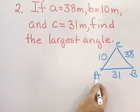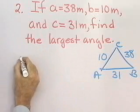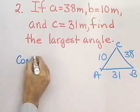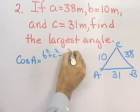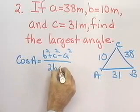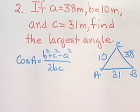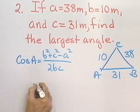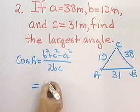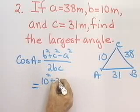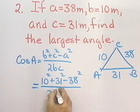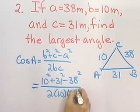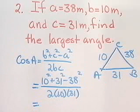I'm going to solve for angle A first using the law of cosines. The law of cosines tells me this: Cosine of angle A will be B squared plus C squared minus A squared, all divided by 2BC. According to the law of cosines, I can write the law of cosines that way to solve for angle A. Let's substitute in now, and I'll have 10 squared plus 31 squared minus 38 squared, all divided by 2 times 10 times 31.